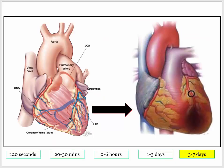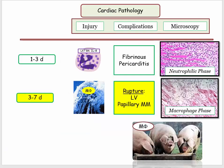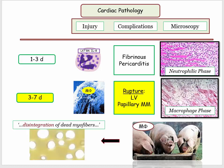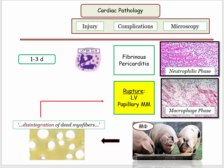Let's move on to days three through seven — the macrophage phase. Macrophages move in to clean up cellular debris after the neutrophils have done their thing. When they are done, the myocardium is characterized by disintegration of dead myofibers, creating clear regions with a Swiss cheese-like appearance. Consequently, the tissue is weakened, and it is during this phase that the tissue is most vulnerable to rupture. The victims: the left ventricular free wall and the papillary muscle.